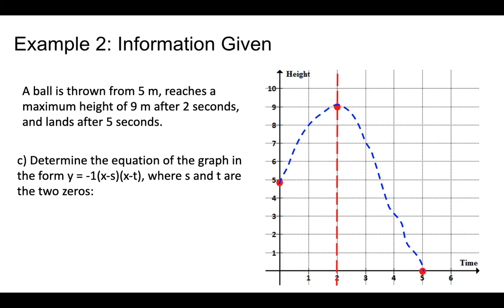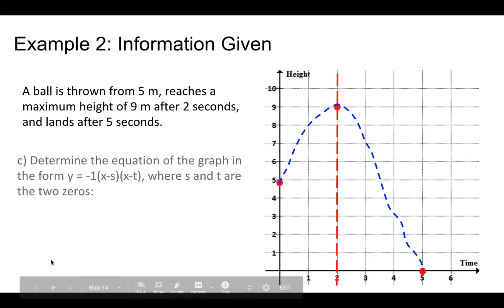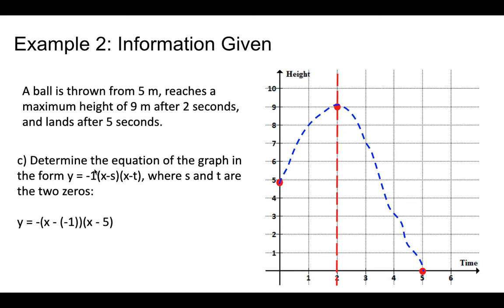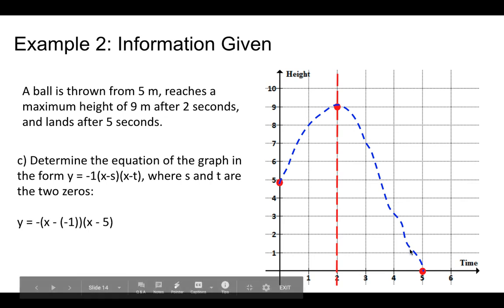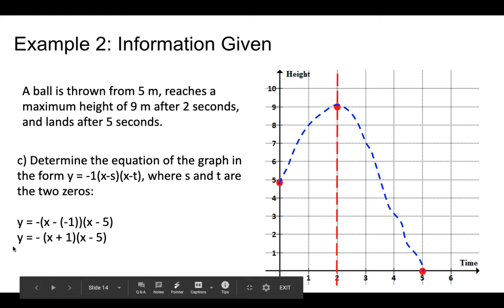Now we're going to find the equation again. Determine the equation in factored form using our two zeros. Our two zeros are (5, 0) and (−1, 0), so we take 5 and −1 and put them in for s and t. It has a negative one because the parabola is opening down. So we get y = −(x − (−1))(x − 5). Subtracting a negative is the same as adding, so our equation is y = −(x + 1)(x − 5).